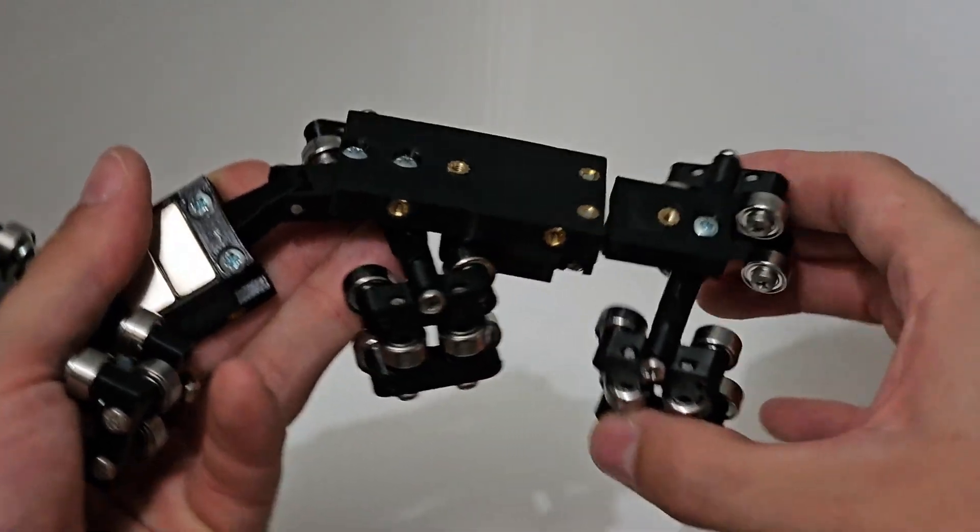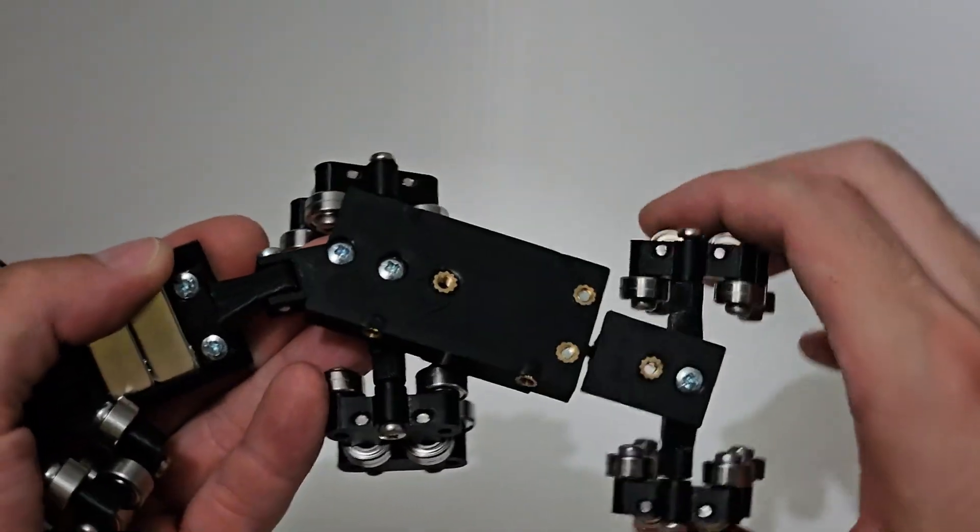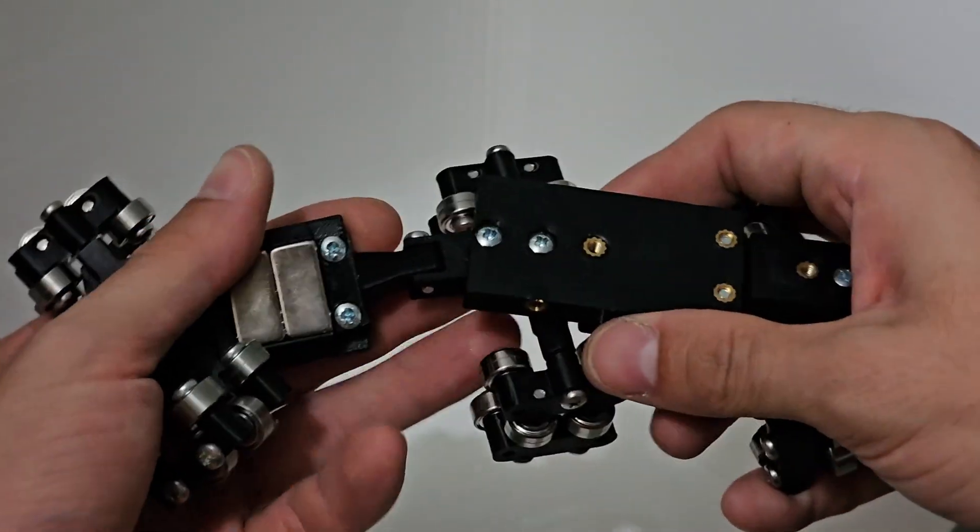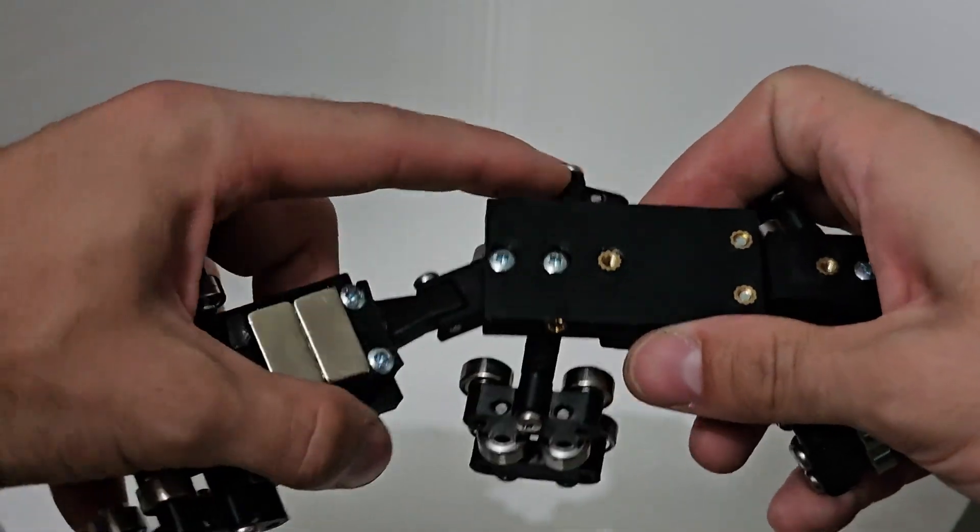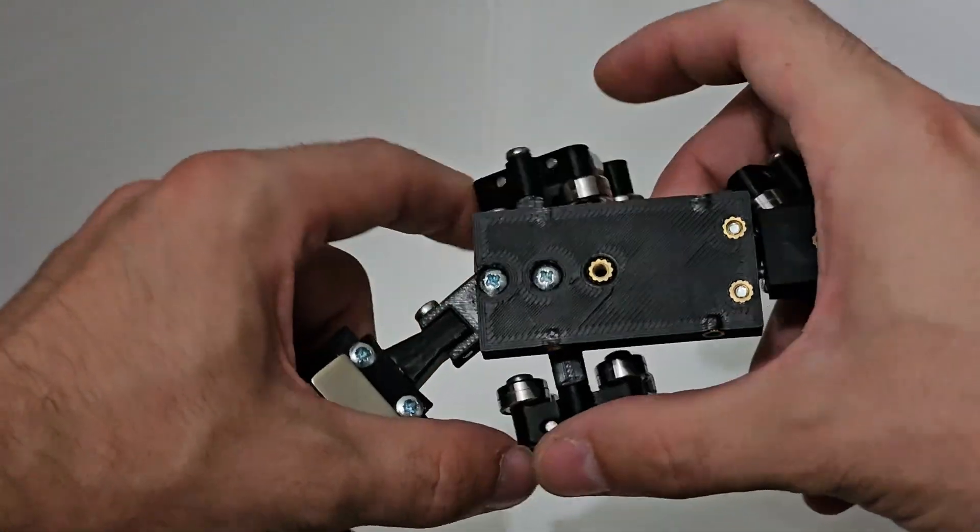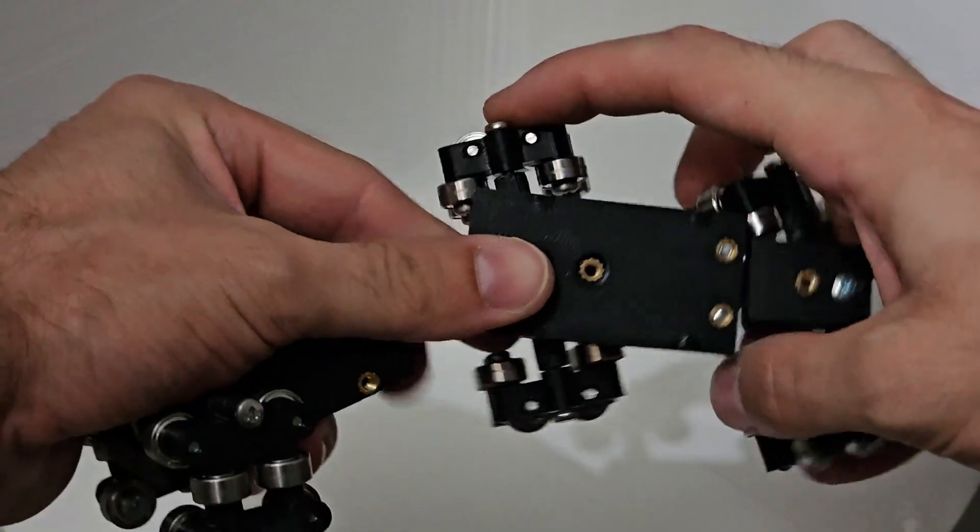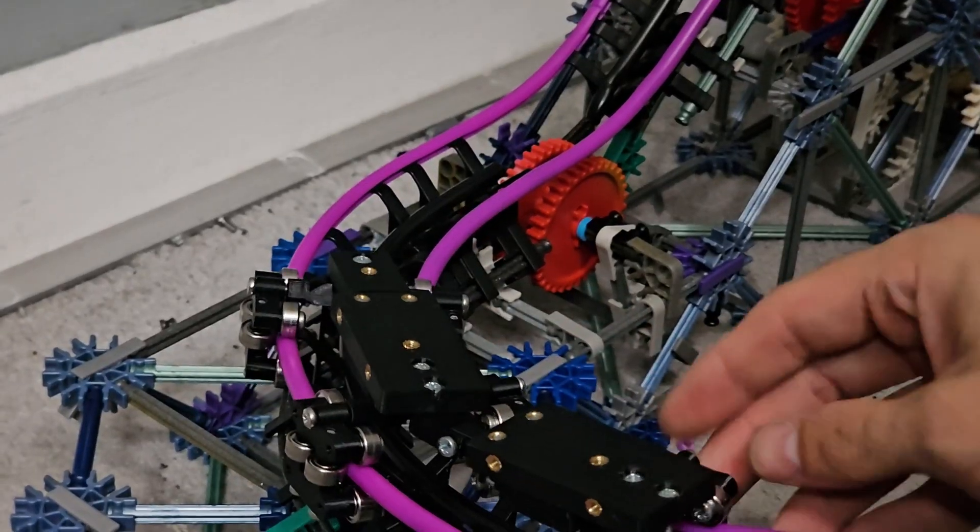You probably just noticed one of the other big changes to the train system itself, and that's that all of the wheel assembly axles now rotate left and right, which means the wheels and the bearings will always point in the direction of the track, even on tight turns.